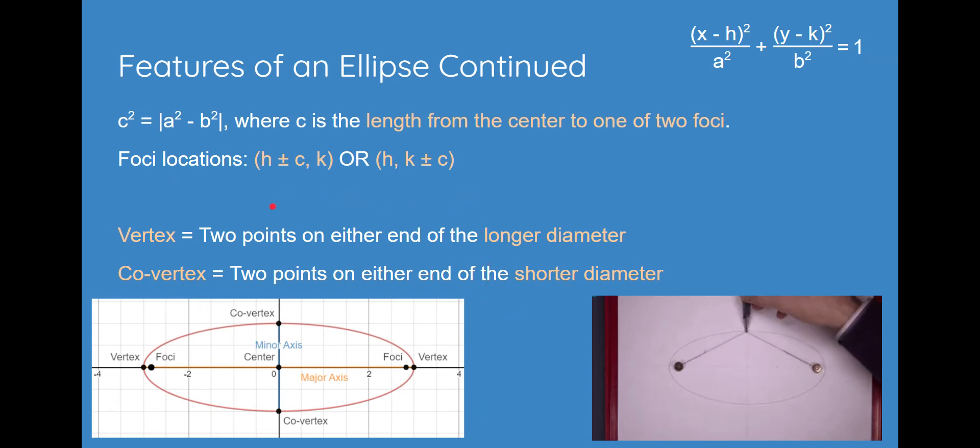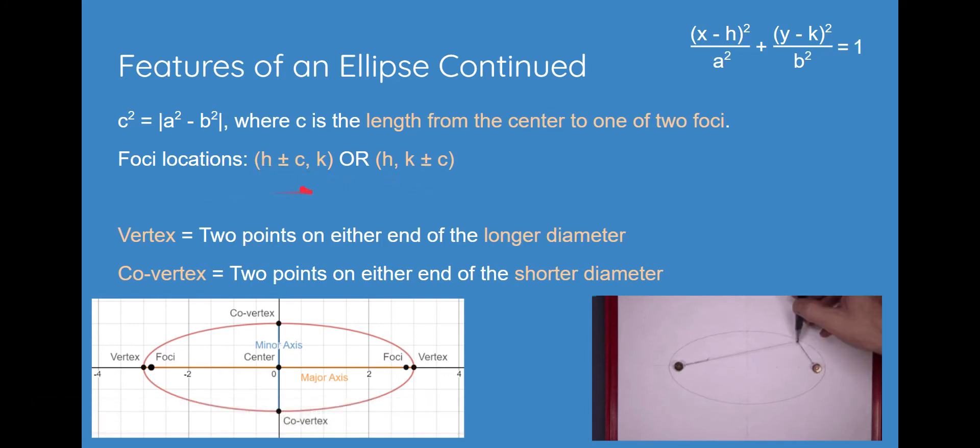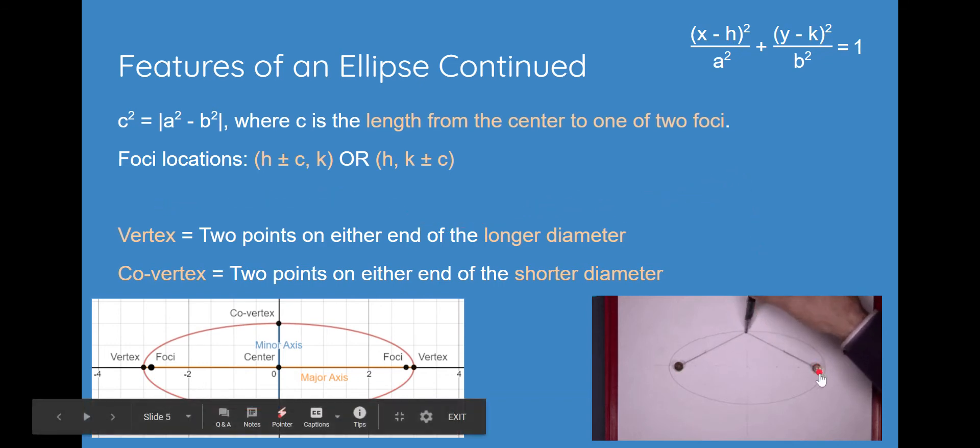As you saw from the last slide, we used this equation to find c, where c, specifically, is the length from the center to one of two foci. And it can be either one of these in coordinate form. And, basically, you can imagine foci as using a string. And the string doesn't change length, but you can move a pencil along it, and you can draw an ellipse using the string and the pencil. These two foci are the only place inside of this ellipse that can draw that ellipse.